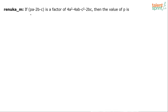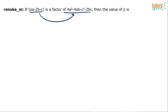So basically, this term p·a minus 2b minus c is a factor of this expression. What does it mean for x to be a factor of y? It means x can divide y. So p·a minus 2b minus c can divide 4a² minus 4ab minus c² minus 2bc.